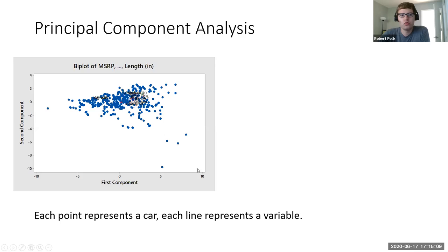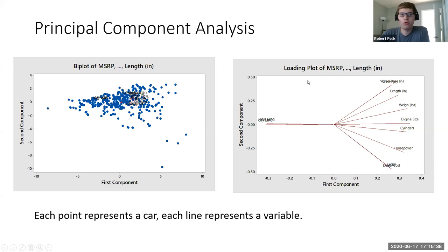So we do that — click the PCA button in Minitab — and we get this graph with two axes: the first component and the second component. Every single data point is a car, and it has a certain property on the first component and the second component describing what its properties are. Now looking at the loading plot, which shows what each individual variable does on our principal components: as you go up on the first component, you have a larger and larger engine. As you go down, you have higher and higher miles per gallon.